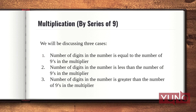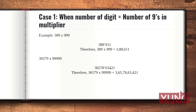Now let's discuss the first case — that is when the number of digits is equal to the number of 9s in the multiplier. Our first example is 389 multiplied with 999. Observe that the multiplier 999 has only three 9s in the number and there is no other digit in the multiplier.